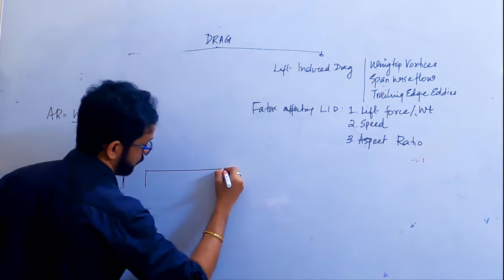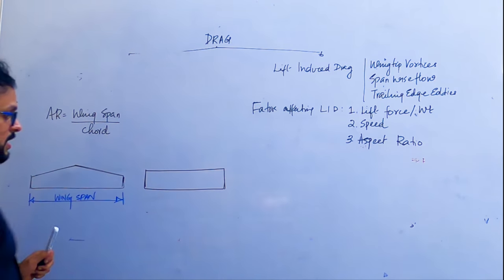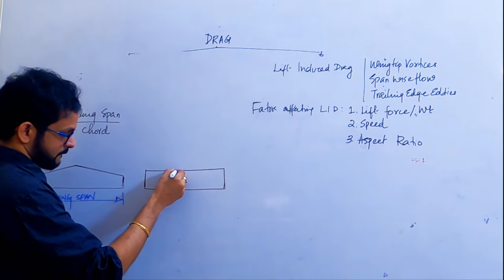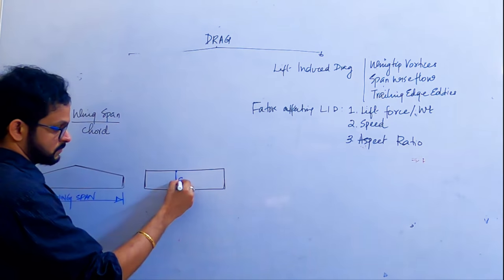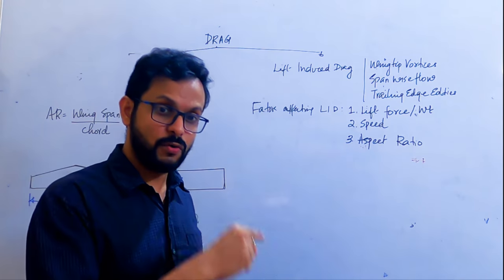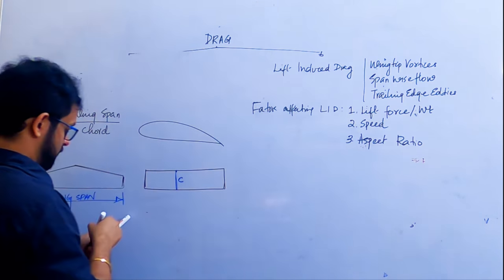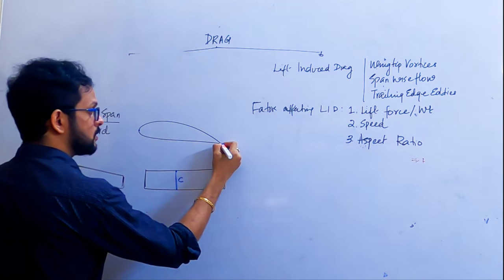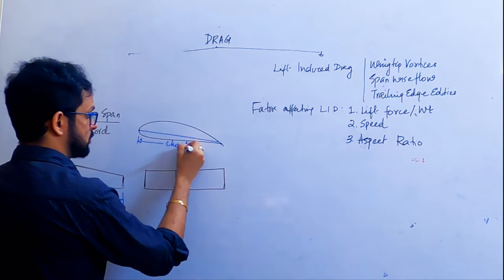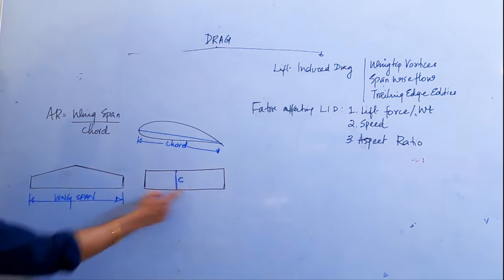Chord is the width of the wing. For a rectangular wing it's easy to explain. The chord line is a straight line joining the centers of curvature of the leading edge and the trailing edge of the wing. The length of the chord line is called the chord. So aspect ratio is the ratio of wingspan to chord.